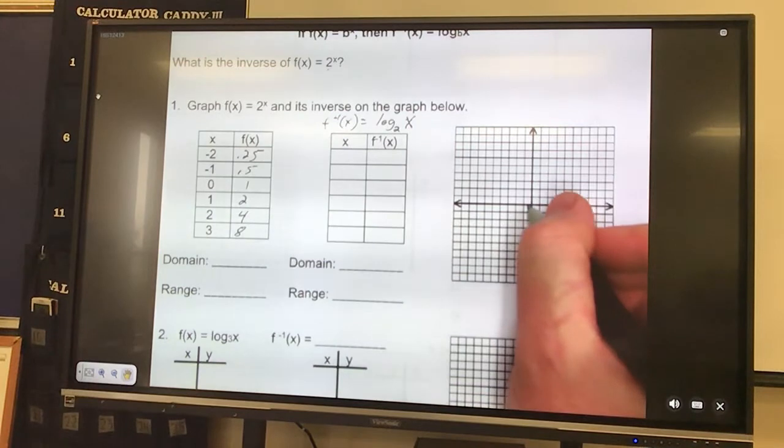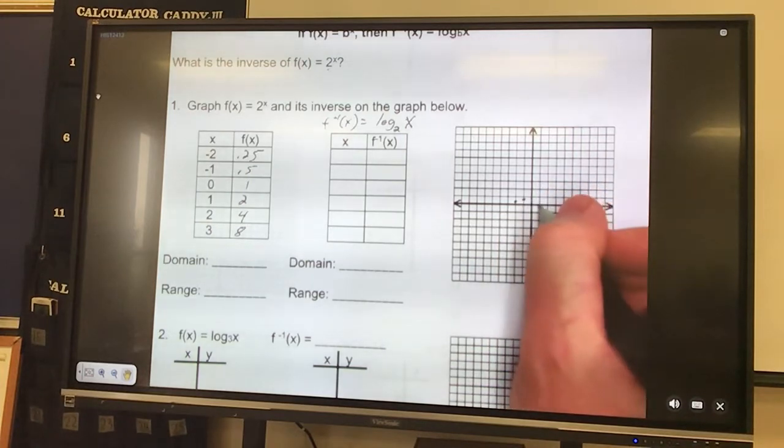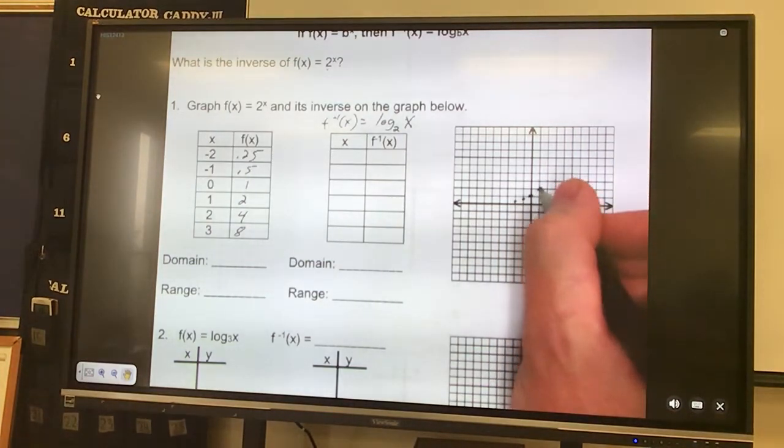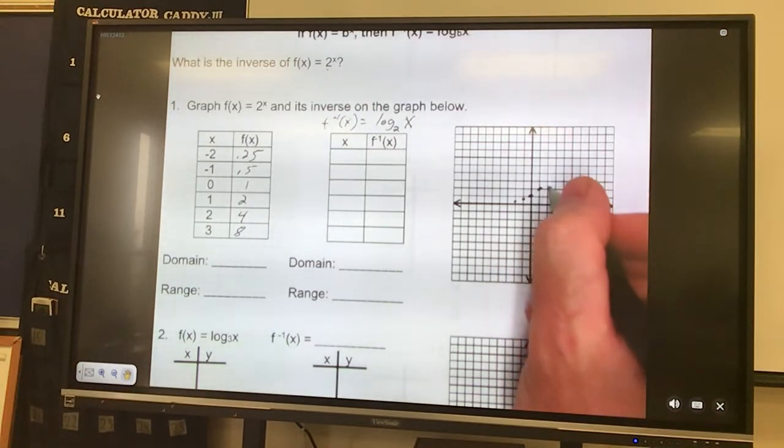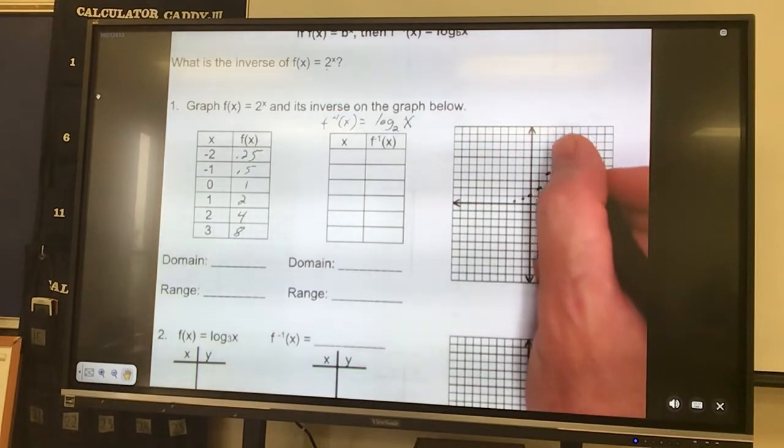So now I'm going to go over and graph that. Over negative 2, up a quarter, over negative 1, up a half, over 0 up 1, 1, 2, 2, 4, and 3, 8. There's 4, 5, 6, 7, 8.